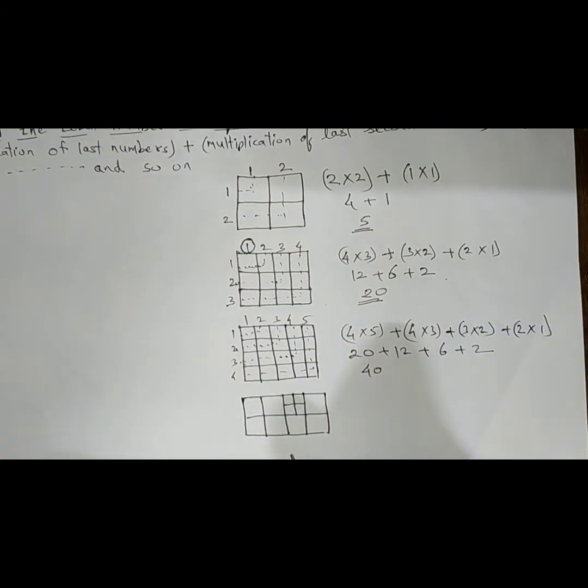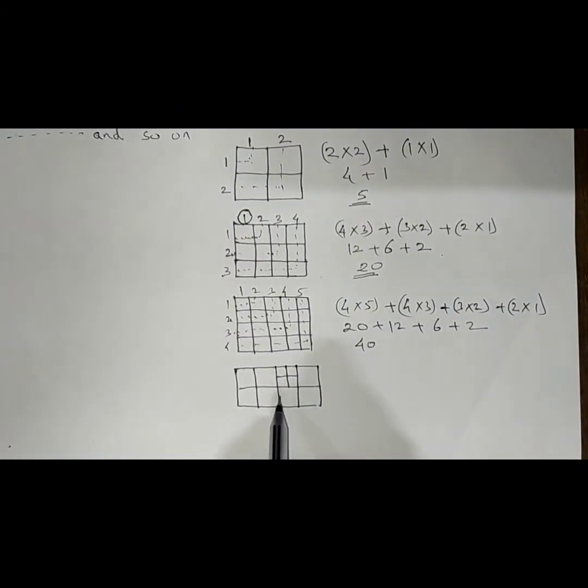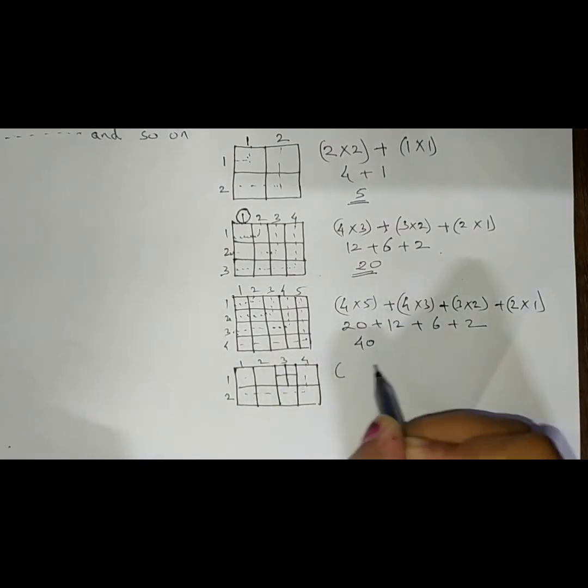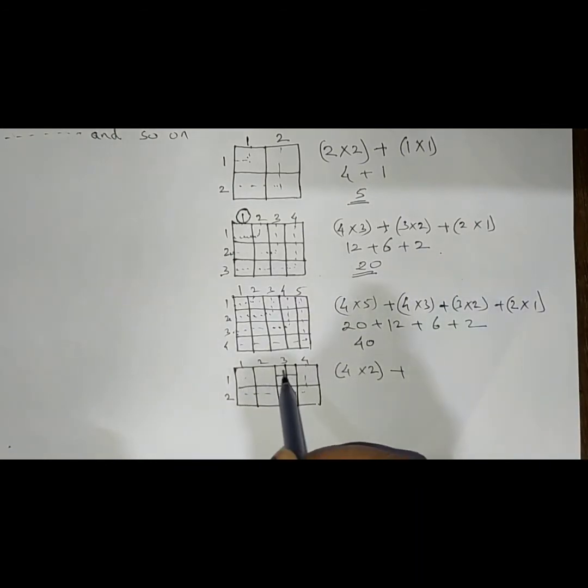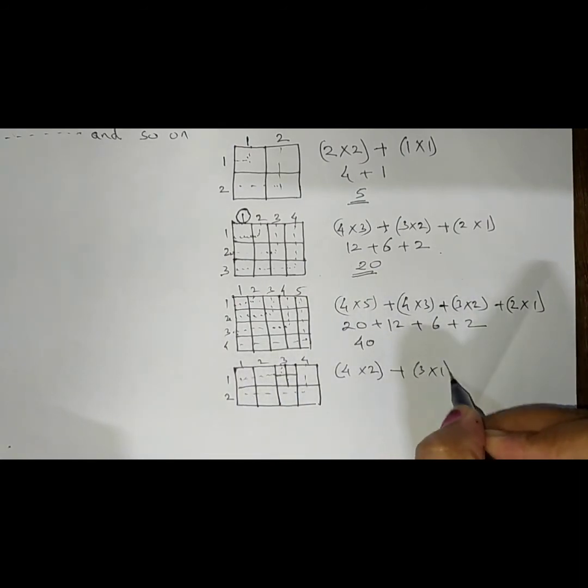But now in the next example, you can find something different. These boxes, these squares, again there is subdivision. First let's go by the first step. 1, 2, 3 and 4. 1 and 2. What is our formula? Just multiply the last numbers. Here the last numbers are 4 multiply by 2 plus. And the last second is 3. 3 multiply by 1. You get 3 multiply by 1. 4×2 is 8. 3×1 is 3. And the answer is 11.